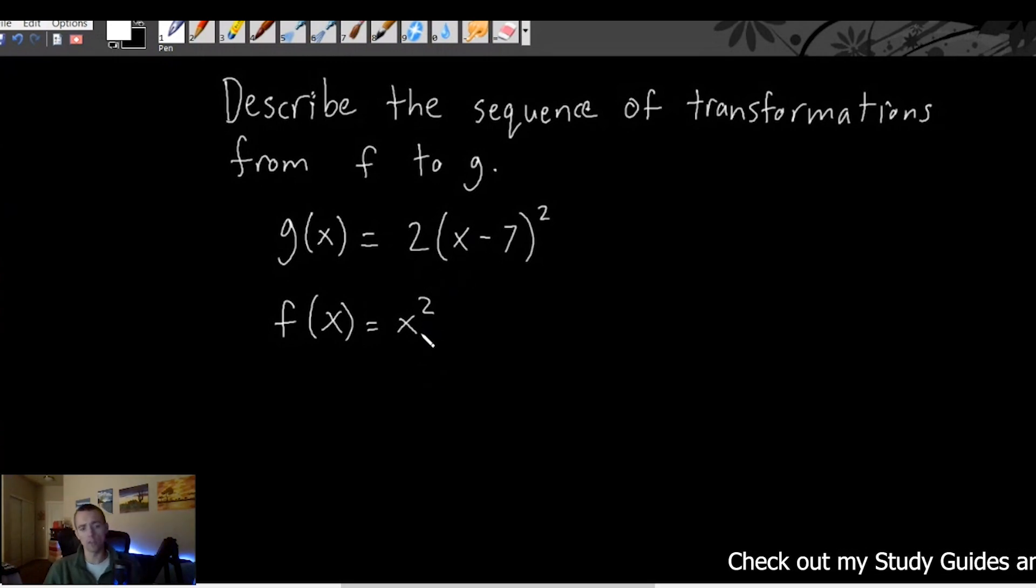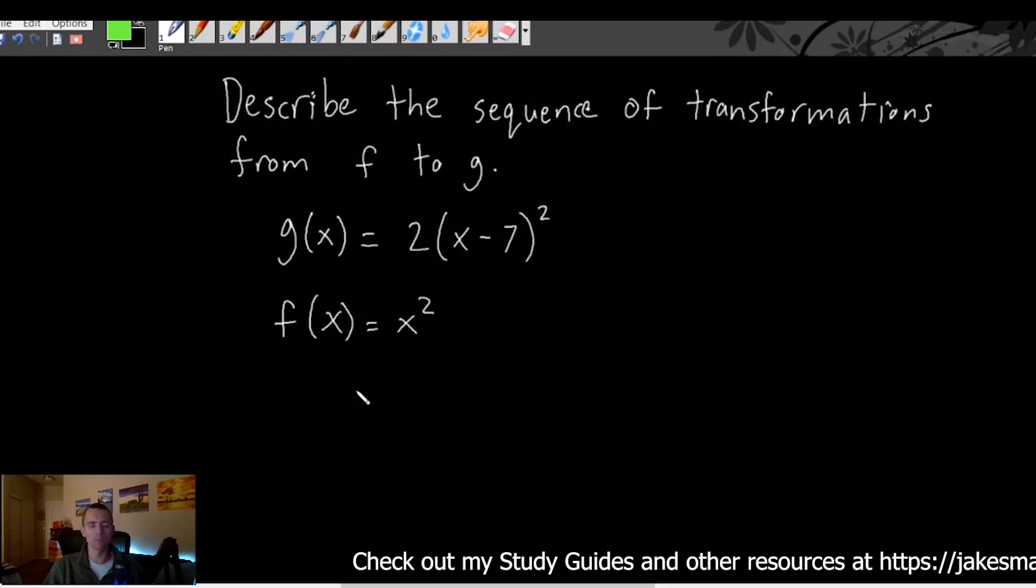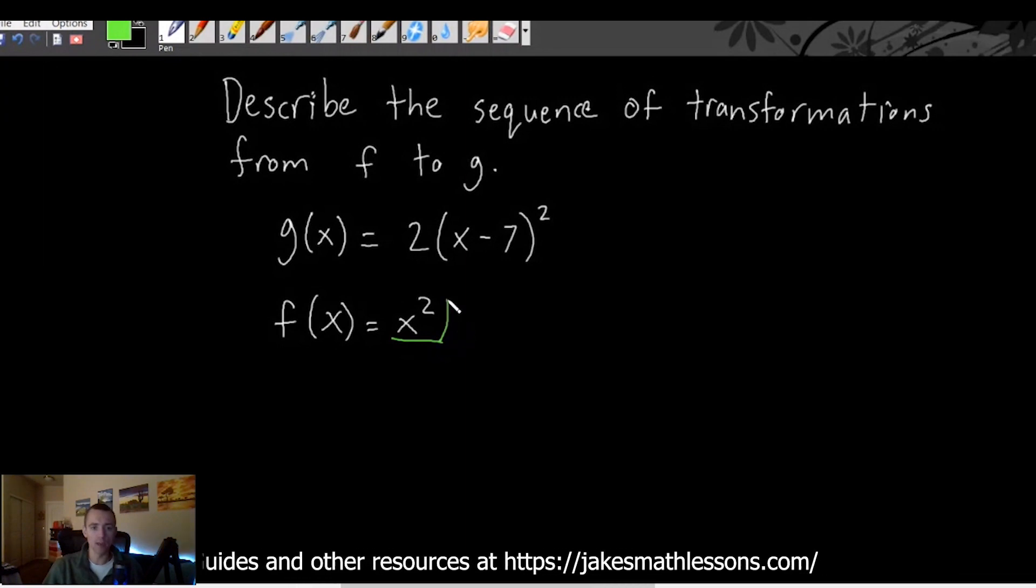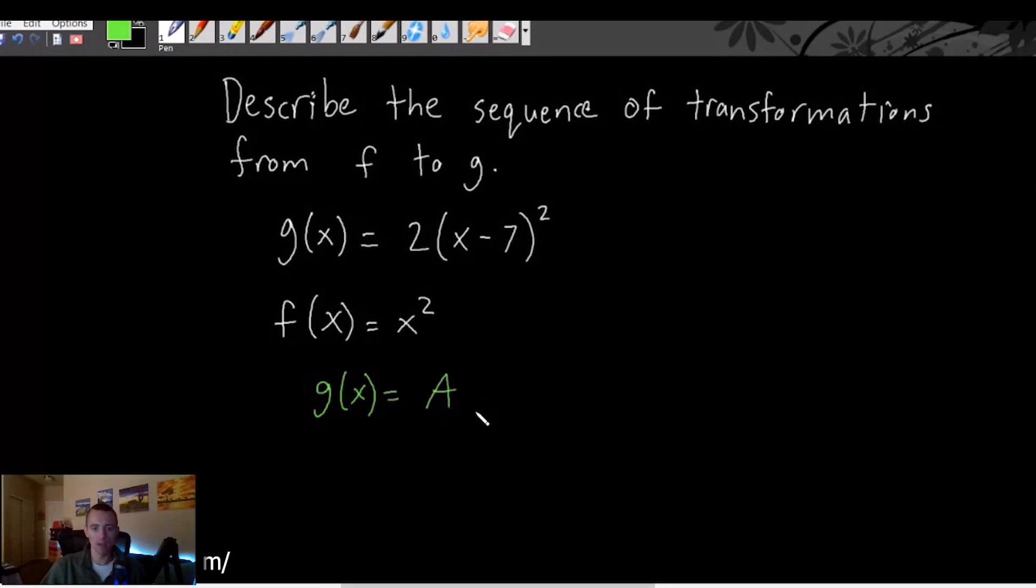And then you want to think about using the general template I was just talking about - what transformations are being applied to this parent function so that it would become the function that we're dealing with here. So if we remember that template, basically it just says that our g(x) is going to be A times f(B times (x - h)) + k.